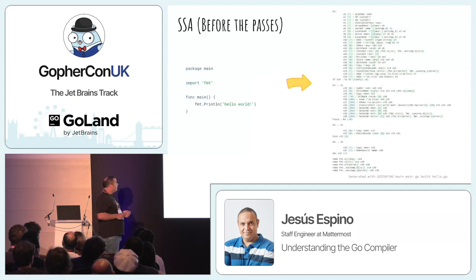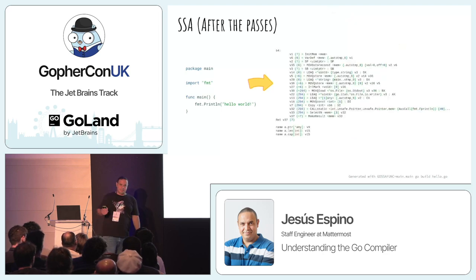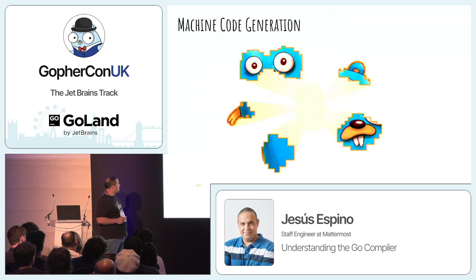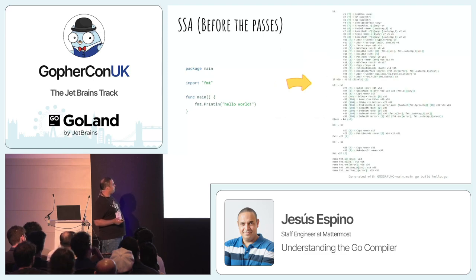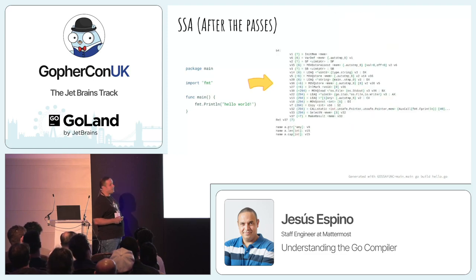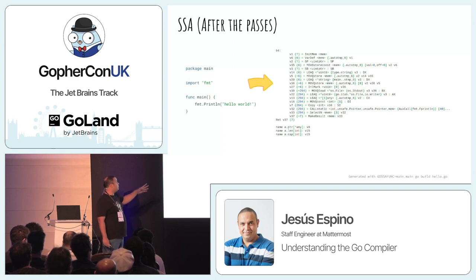Here's the Hello World SSA before the passes, and this is the result after the passes. Before we had four blocks; after we only have one, because you don't need more than one block in this case. It's pretty amazing how the SSA transformations get you to that point.